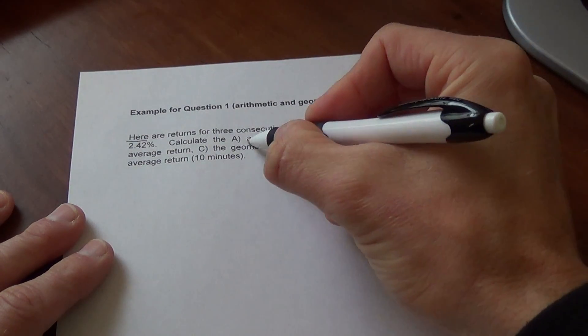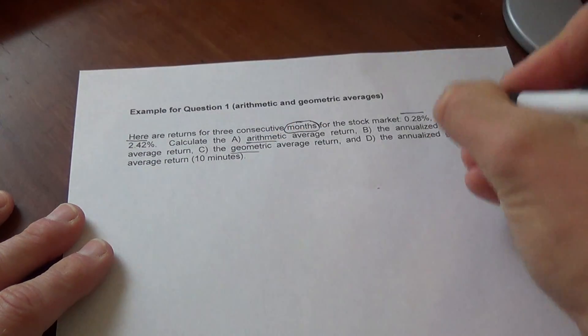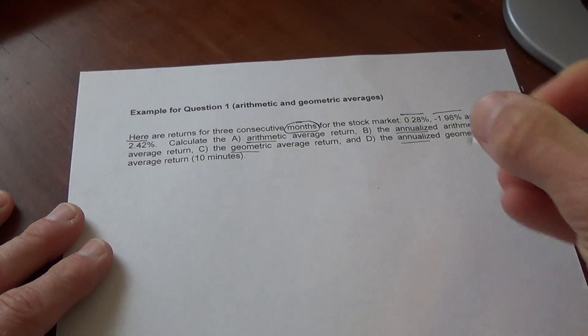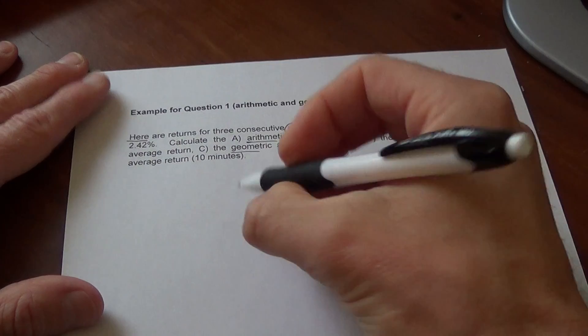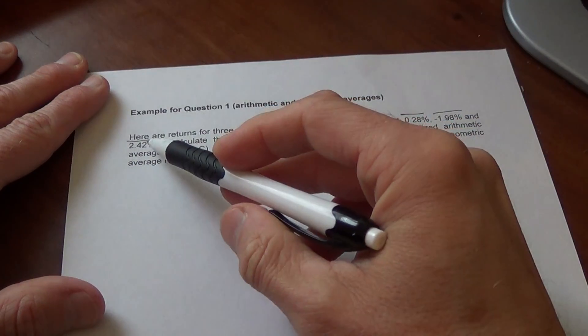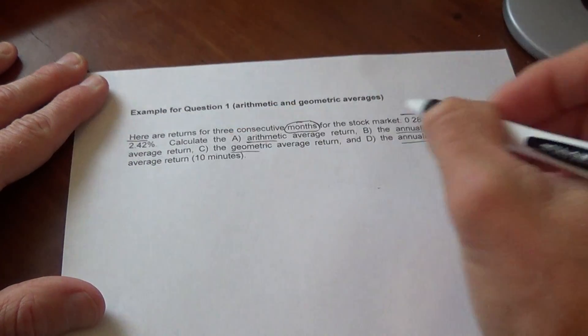So we need to calculate the arithmetic average and the geometric average, and we want to annualize that. I'll start with the arithmetic average, which is the simplest one. We just take the three numbers, add them together, and divide by three.